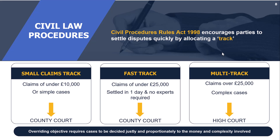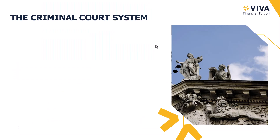The overriding objective requires that cases be decided justly and proportionally to the money and complexity involved. The priority is a just decision — not necessarily the cheapest or fastest outcome. Even if a case is placed on a particular track, the courts won't rush it through; the goal is always to reach a just decision.